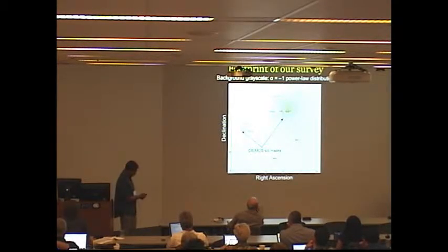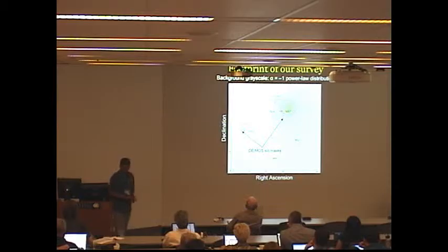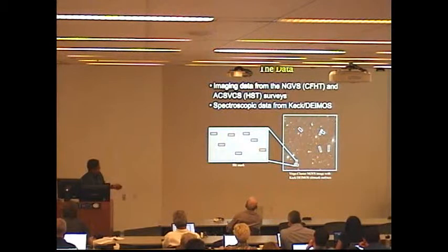So these so-called orphan globular clusters are all found in our nine masks. Our nine masks are shown here. That's M87. The background grayscale is just an alpha minus one, alpha to the minus one power law distribution. So here is a real image from NGVS with some of our masks. And so again we are using imaging and spectroscopic data.